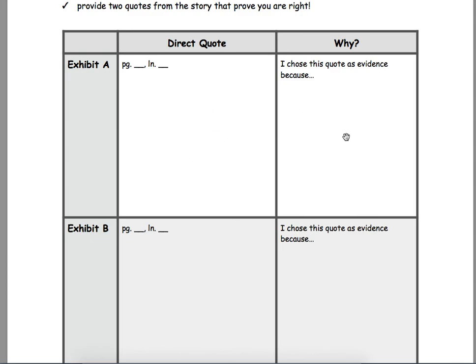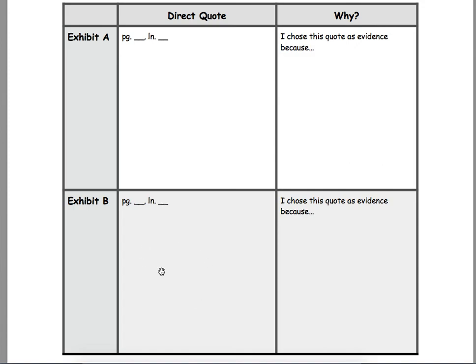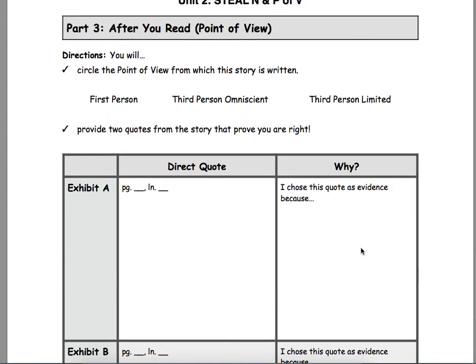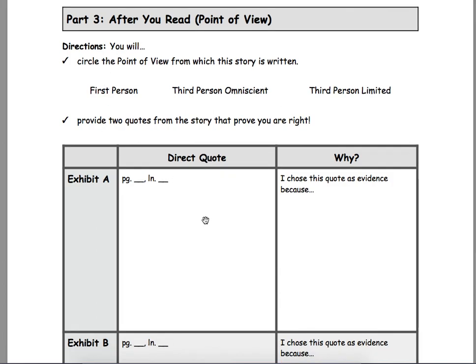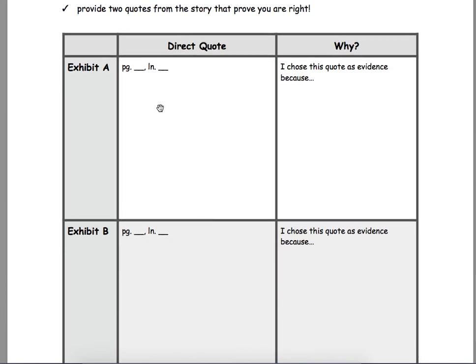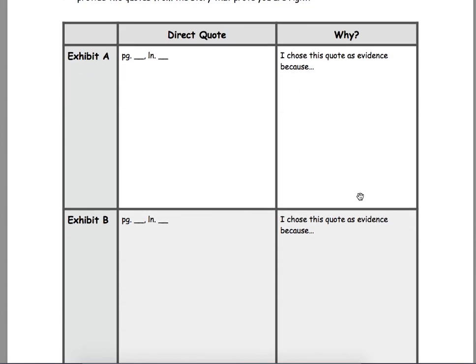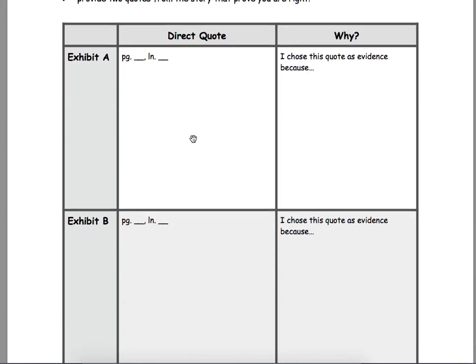And then explain, well, the narrator was able to jump into this character's head. And then show how the narrator gets into another character's head for Exhibit B. If it's first person, you need to show how it's I, or my, or how the character's in the story. If it's third person limited, you need to show how it's only focused on one character. Even though the narrator's not in the story, the narrator's still only focused on the thoughts of one character.